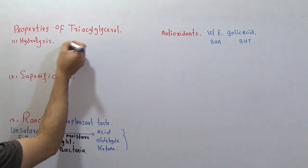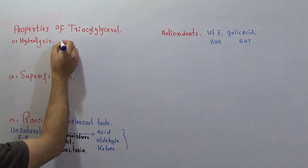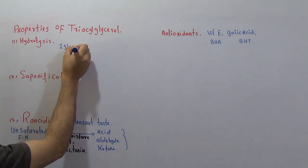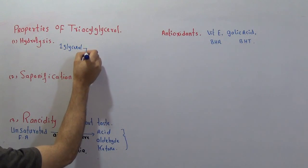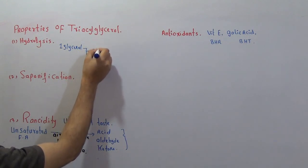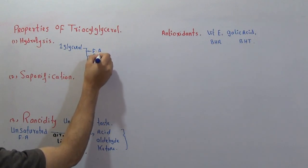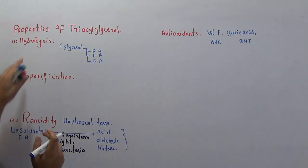In hydrolysis, a triacylglycerol is simply hydrolyzed. In triacylglycerol there is one glycerol, and this glycerol is connected with three fatty acids - one, two, three fatty acids combined with one glycerol. This is called triacylglyceride.